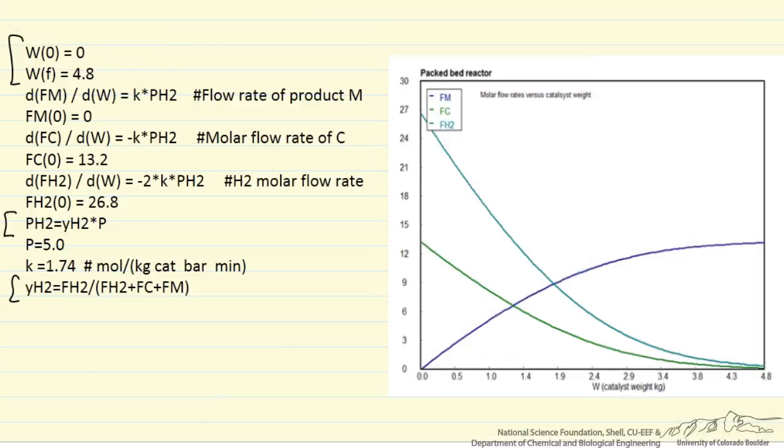And then the output is going to show this is the molar flow rate of the product, the molar flow rate of hydrogen, and the molar flow rate of the other reactant. And this shows how they change as a function of catalyst weight, so in this case we get almost complete conversion for this amount of catalyst.